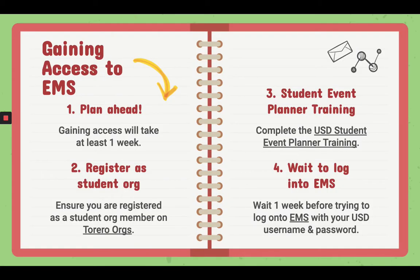First we'll talk about gaining access to EMS. One, you want to plan ahead — gaining access will take at least one week. Two, ensure you are registered as a student organization member on Torero Orgs. Three, complete the USD student event planner training, which will be linked below. And four, wait one week before trying to log on to EMS with your USD username and password.